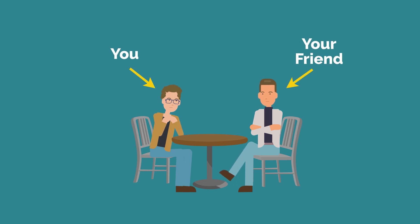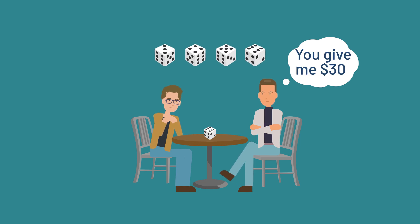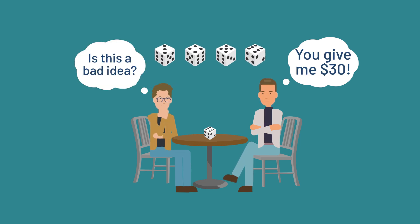Your friend offers to play a game with you involving a six-sided die. If the roll is one or two, they will give you $48. If it's anything else, you have to give them $30. Should you play the game?